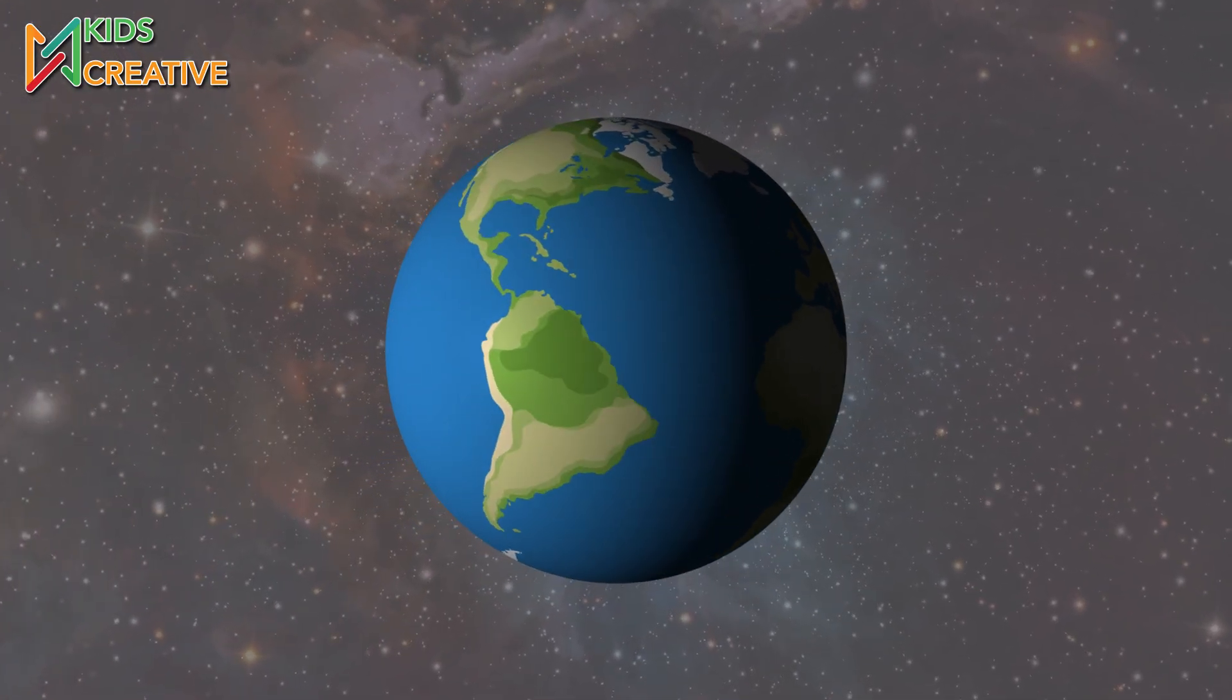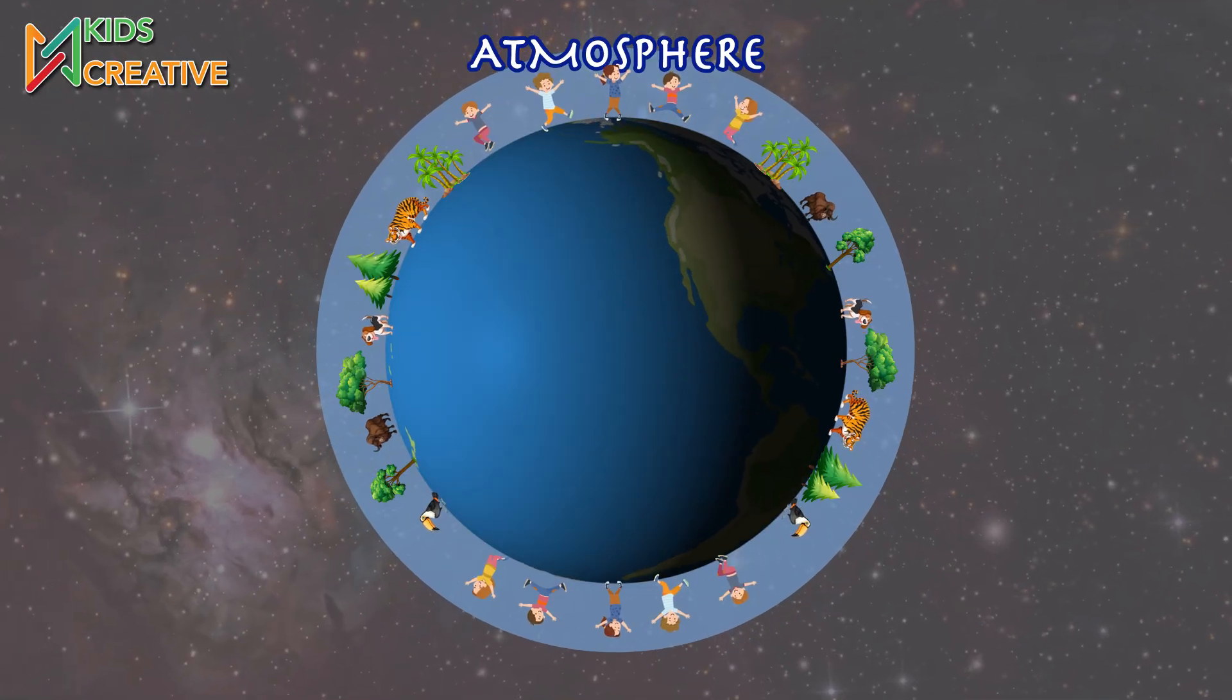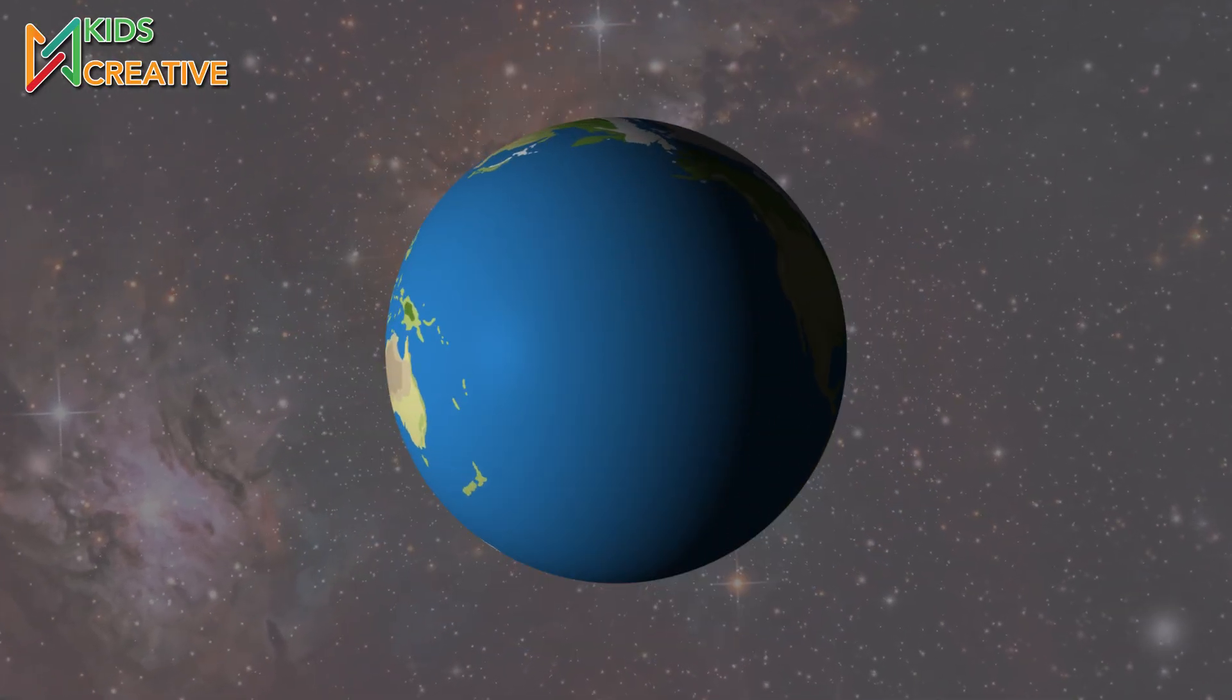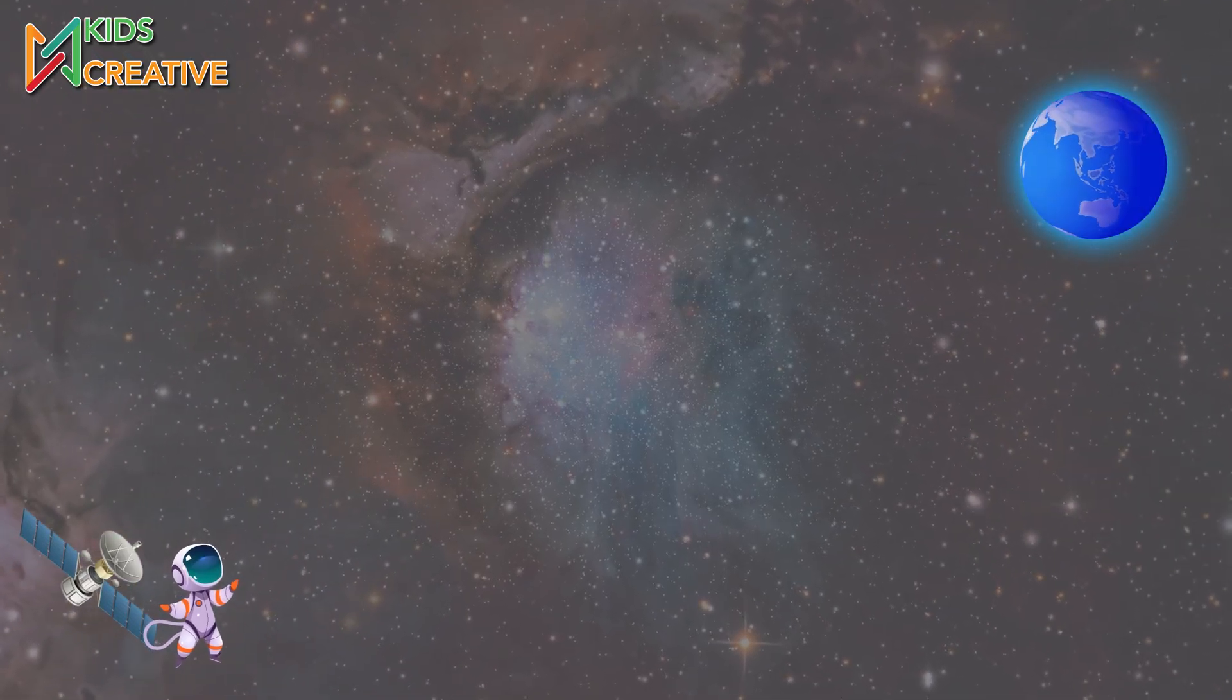Earth is the only planet with life. Its atmosphere keeps us safe and provides oxygen. About 70% of Earth's surface is water, making it look blue from space.